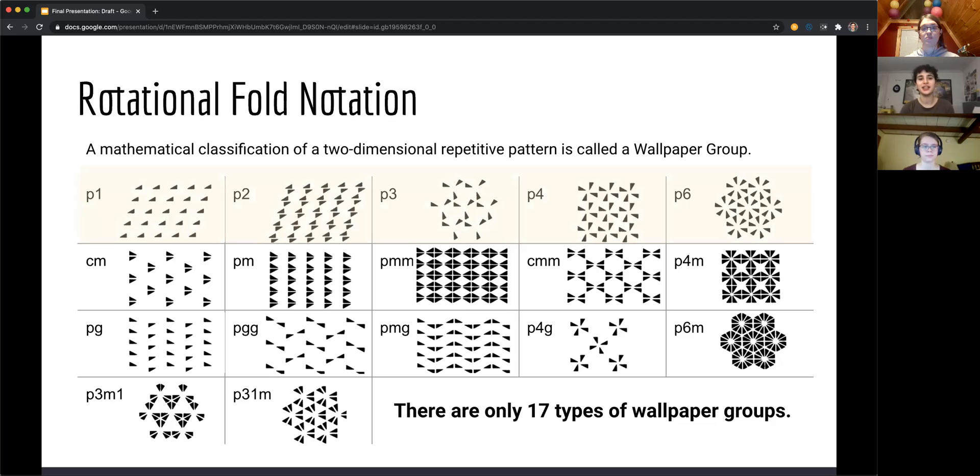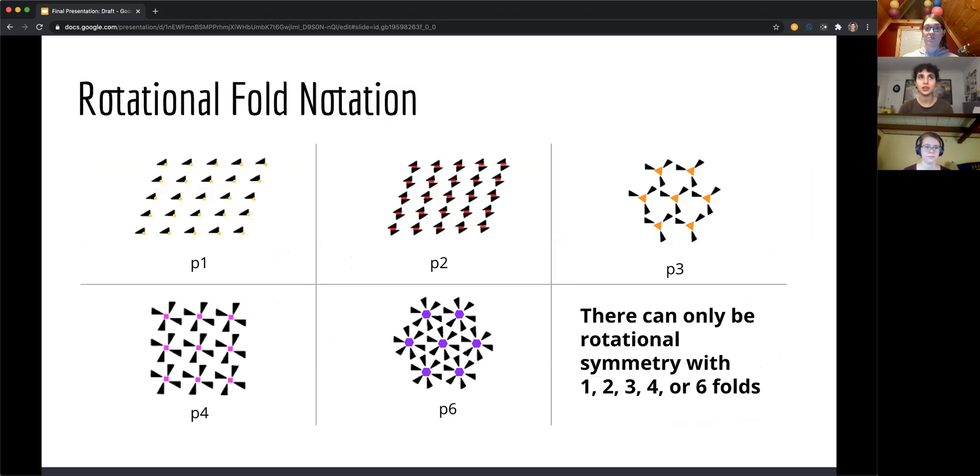First, I have highlighted some of the wallpaper groups that have a number in them. This number represents rotational fold symmetry. There are more groups that have rotational fold symmetry than the ones I have highlighted, but these are just the ones I'm going to go over in the presentation. The rest are in our supplemental documents. So here you can see our rotational fold notation. For example, in P4, you can see how each point of rotational symmetry has a triangle every 90 degrees. And that makes four of them, which is why it's labeled P4.